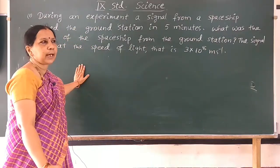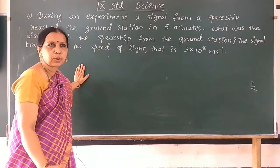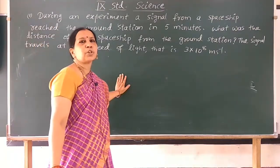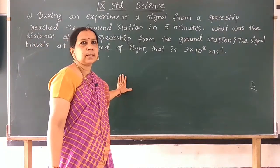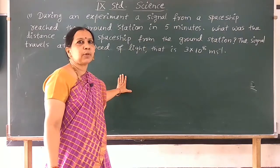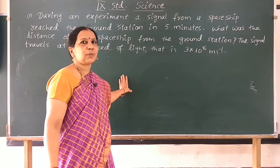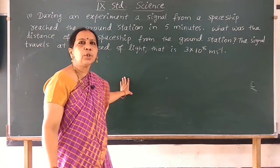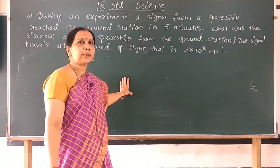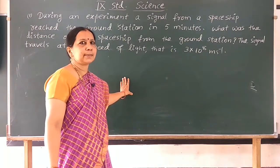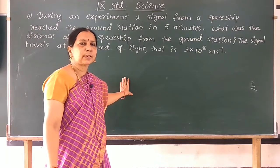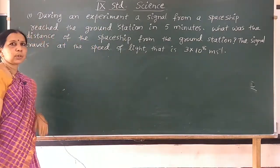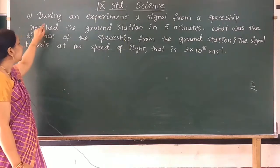In the last class we also discussed about the instrument used to measure the distance travelled. What is the instrument that is in the vehicle? Distance travelled is measured using an instrument called odometer. The odometer of the vehicle is used to measure the distance travelled. Now let us work out another problem here.